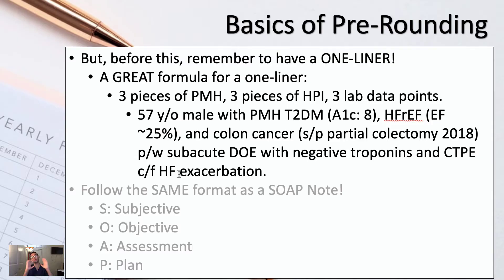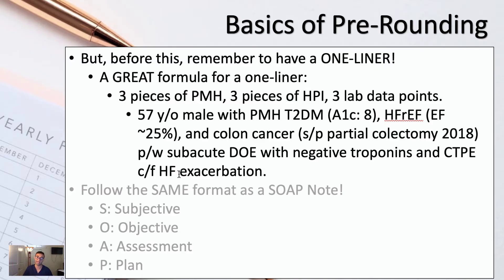You should have a one-liner set for every single patient you pre-round on because it guides your assessment. If you just blindly pre-round on someone, you don't know what to focus on. But with this patient presenting with shortness of breath, maybe we focus on their lungs during the physical exam, look at their procalcitonin as a lab marker, or look at their chest x-ray. It guides the rest of your plan when you pre-round on this patient.